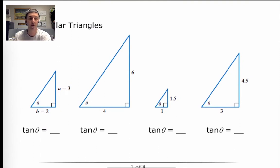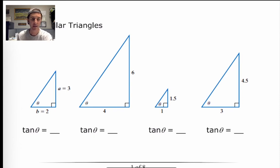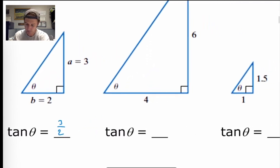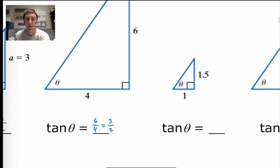Similar triangles have the same angle measures as one another. In the bottom left corner of every one of these triangles there's a little theta, and that theta is the same number of degrees or radians each time. If I take the tangent of theta in the first diagram, opposite over adjacent is 3 over 2. In the second, it's 6 over 4, which reduces to 3 over 2. In the third, 1.5 over 1 multiplied by 2 gives 3 over 2.